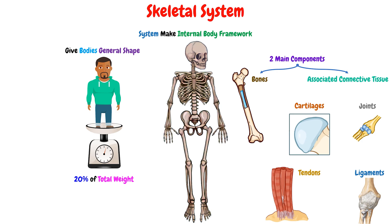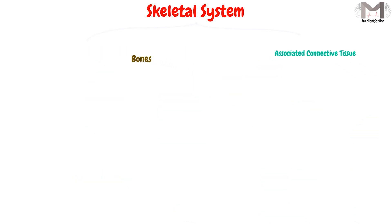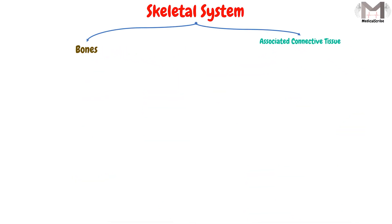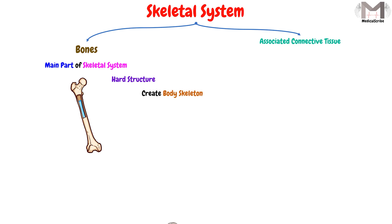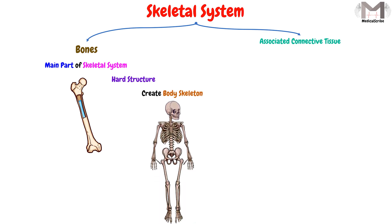Now we will talk about each component and understand it in general, because in the upcoming videos we will cover them in detail. The first component is the bone, which is considered the main part of the skeletal system — a hard structure that creates the body's framework, or the body's skeleton. The bones are considered the main component of this skeleton.